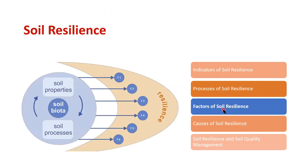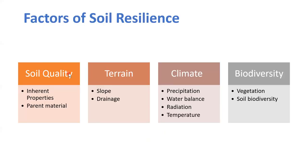Then we have factors of soil resilience. We have soil quality which affects resilience, inherent properties of course, and parent material as well. Then we have terrain — the slope of the soil, which is very important because if you have a very high slope that will be very prone to soil erosion. Drainage — how the water is drained from the soil. Precipitation affects soil resilience, whether snowfall or rainfall. The water balance in the soil — how moisture is preserved and how much moisture is preserved. Radiation and sunlight affect the temperature of the environment.